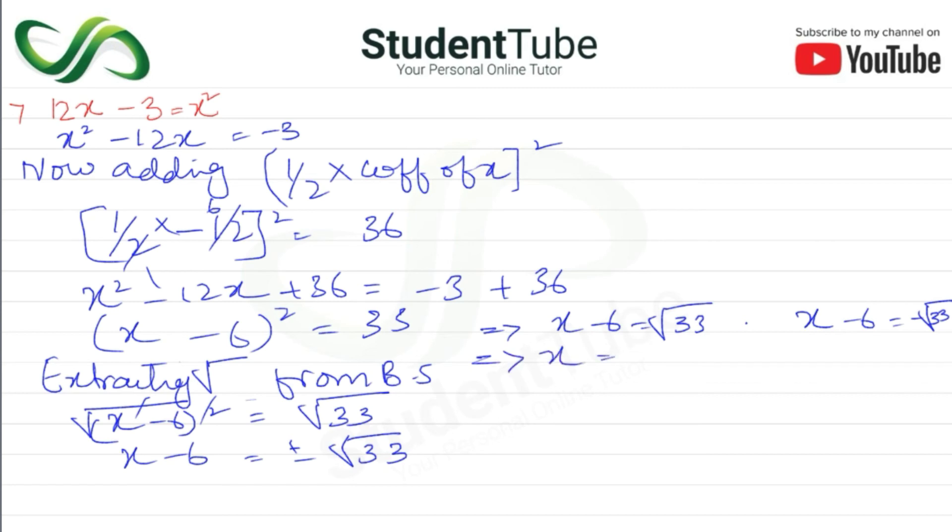And x = 6 - √33 in the second case. So our solution set is {6 + √33, 6 - √33}. This is the answer.